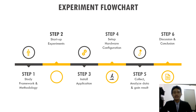The experiment consists of six steps under element four: step one, study the framework and methodology; step two, start up the experiment; step three, install applications; step four, set up hardware configuration; step five, collect and analyze data and gain results; and step six, discussion and conclusion.